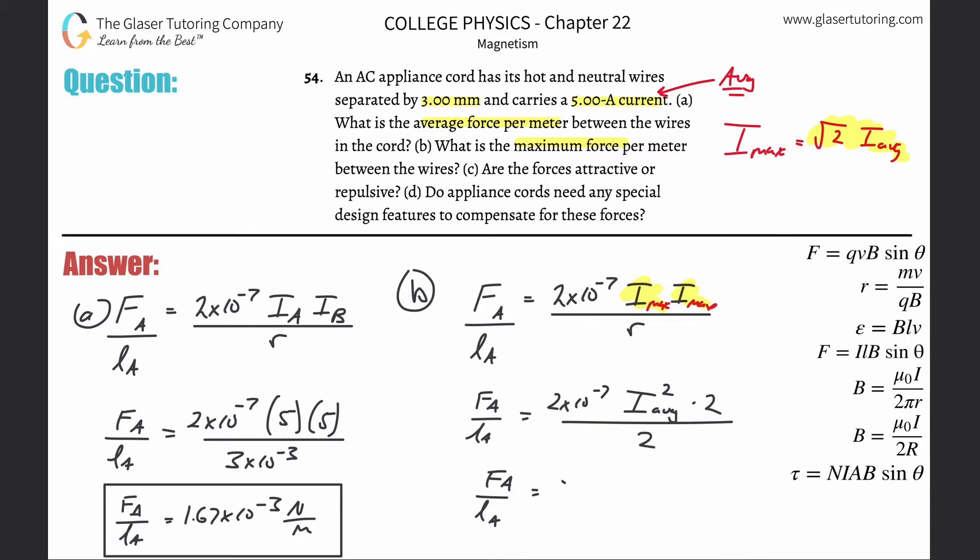And then we're just going to, I'm just going to take that answer, multiply it by 2 because it's that straightforward. And it's going to be 3.33 now times 10 to the minus 3 newtons per meter. And that takes care of letter B. Oh, there's more. Are the forces attractive or repulsive?